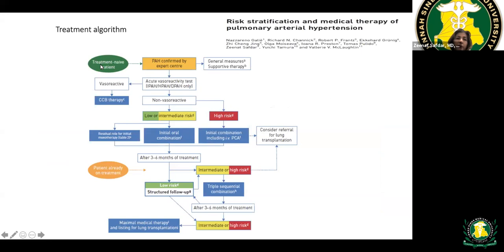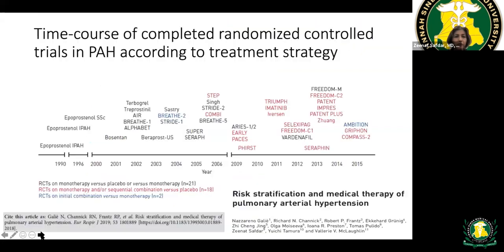The treatment algorithm begins with right heart catheterization. During the cath, vasoreactivity testing is performed with nitric oxide or adenosine. If there is a significant reduction in pressure, a calcium channel blocker can be used — but only in about 5–10% of patients. The remaining 90–95% require risk stratification: low-risk patients start on dual therapy, while high-risk patients require triple therapy and referral for lung transplantation. Available drugs have expanded from one or two in 2000 to approximately 14 medications today.